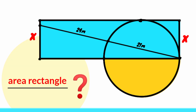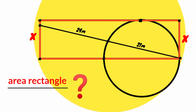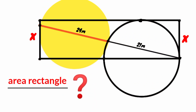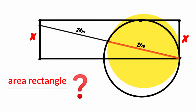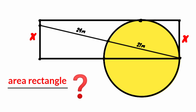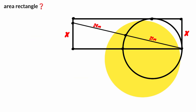Hi friends, you are welcome back to another interesting question. We are to determine the area of this rectangle. The length of this line segment is 24 meters, and that of this is 21 meters. We have here a circle, so how can we solve this?